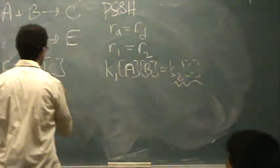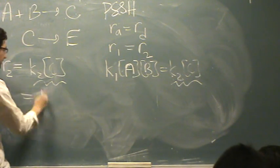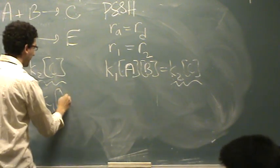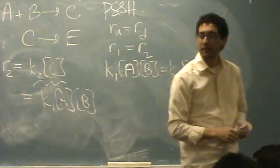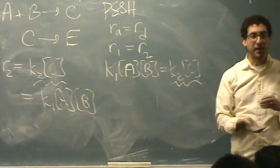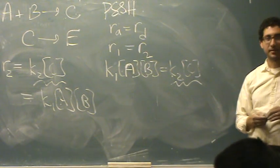Notice that this equals this. So the answer is K1, A, B. And A and B are not intermediate, so I'm good to go. Is that all right, Jeff? Yeah. Okay.